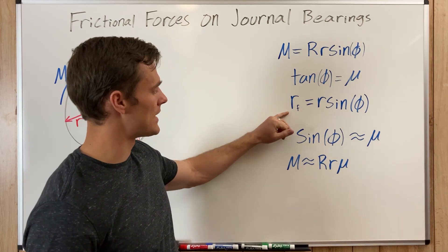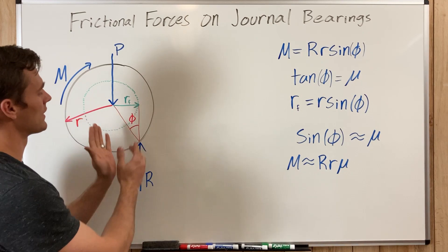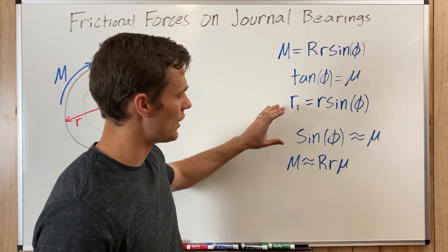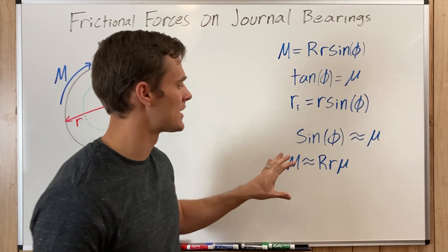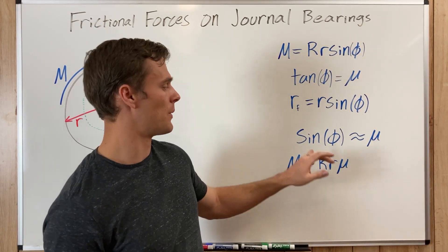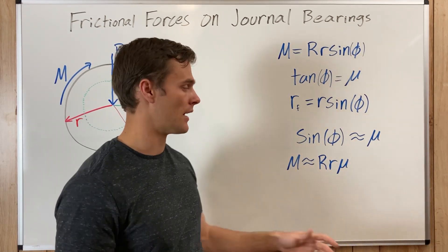Then you have the radius of the circle of friction, and if you look at this, look at the trig there, you'll see what that comes from. And then you have these two approximation equations, and because angle phi is usually a pretty small angle, we can approximate it by saying that sine phi is equal to mu.